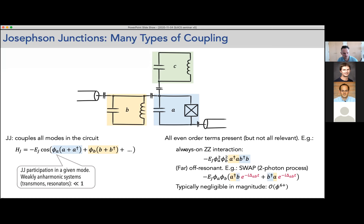These prefactors can be really, really small — generally small for transmons, for example, because they're not strongly anharmonic — but they're there. If you walk through all the terms in this interaction, you can see there are many terms we typically choose to ignore. Some we don't ignore, like the always-on ZZ interaction of the form a†a b†b between eigenmodes — the dispersive interaction mentioned before. But we also have all even-order products from the cosine term, including two-photon swap processes and higher orders. We normally just throw them away because they're far off-resonant.